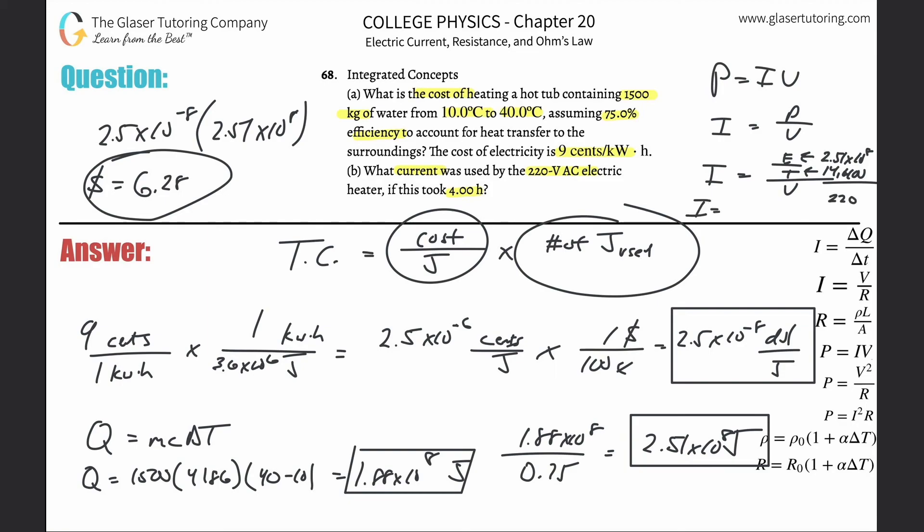So the current here finally is going to be 2.51 times 10 to the eight divided then by 14,400, and then divide that by 220. So 79.2. So 79.2 amps. There you go, guys. Thank you so very much for tuning in. Hope this helped. Please remember to help us out and subscribe. We'll see you soon. Take care.